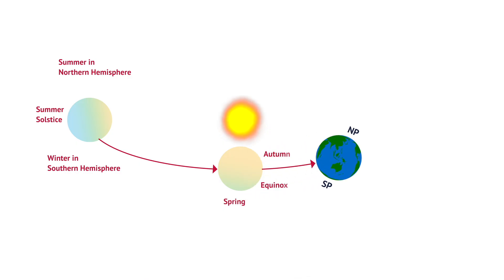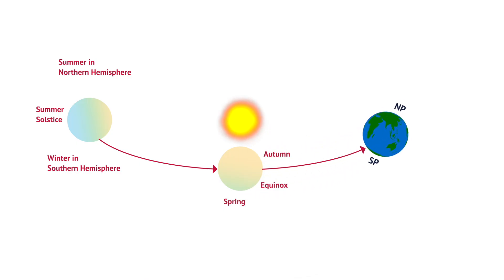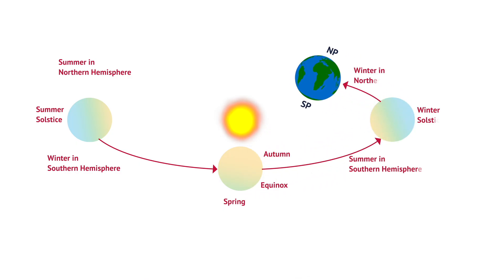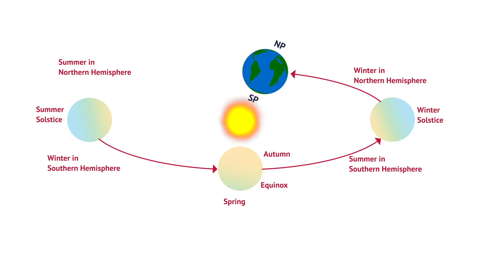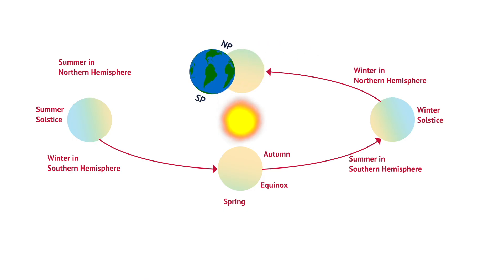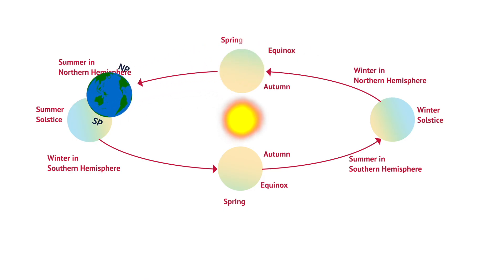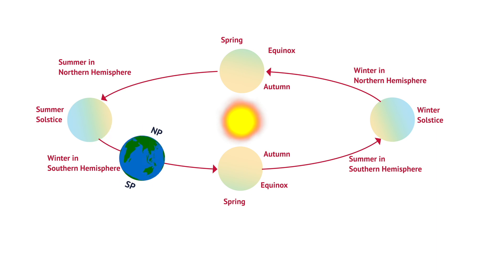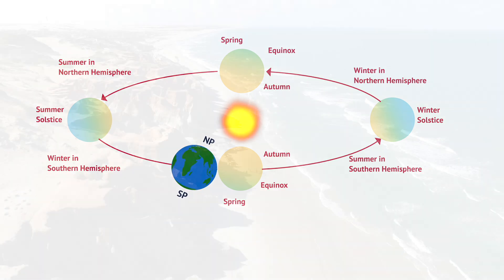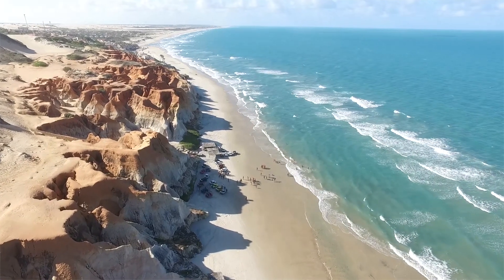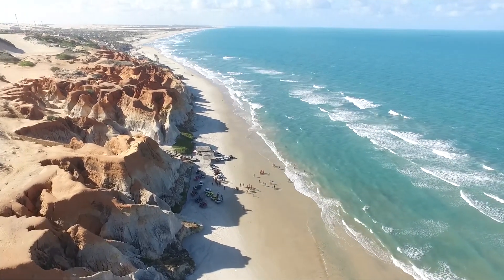As Earth moves around the Sun, the angle at which sunlight strikes different parts of the globe changes. When the Northern Hemisphere is tilted toward the Sun, it receives more direct sunlight, causing longer days, warmer temperatures, and marking summer in the North.